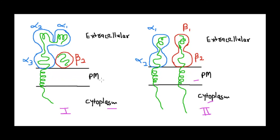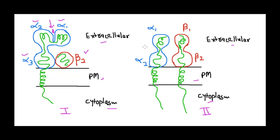Now let's look at the structural difference. Both MHC class 1 and class 2 have a cytoplasmic region, a transmembrane region, and an extracellular region, and both have two polypeptide chains — an alpha chain and a beta chain. In MHC class 1, the alpha chain has three subunits: alpha 1, alpha 2, and alpha 3. The alpha 1 and alpha 2 domains form the peptide-binding cleft — the site where the antigenic peptide is presented.